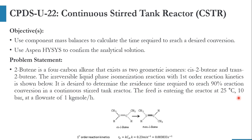The feed enters the reactor at 25°C, 10 bar, at a flow rate of 1 kg-mol per hour. The objective is to use a component mass balance to calculate the residence time, and then confirm the result against the analytical handwritten solution. I will show the handwritten answer at the end and compare it with the simulation result.